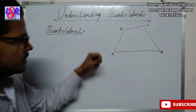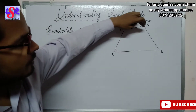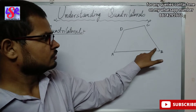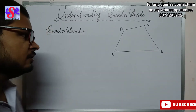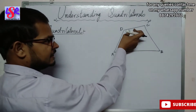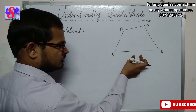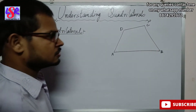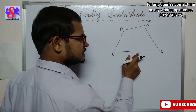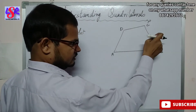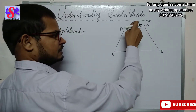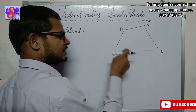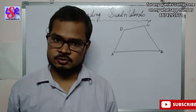The opposite angles: this angle is opposite to this angle, and this angle is opposite to this one. Then we have opposite sides: this side is opposite to this one, and this side is opposite to this one. We also have adjacent sides: this side is adjacent to this one, this is adjacent to this, and so on.